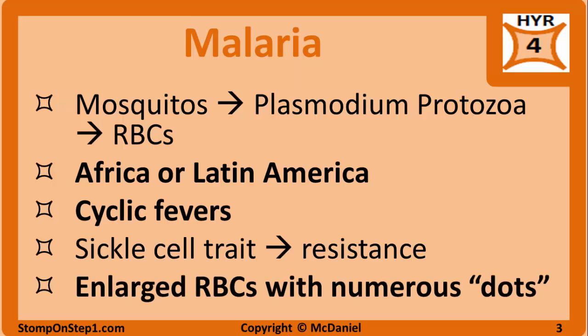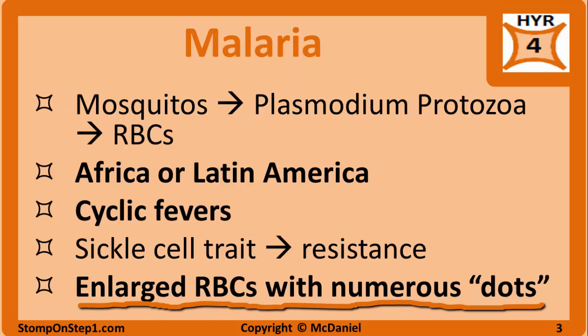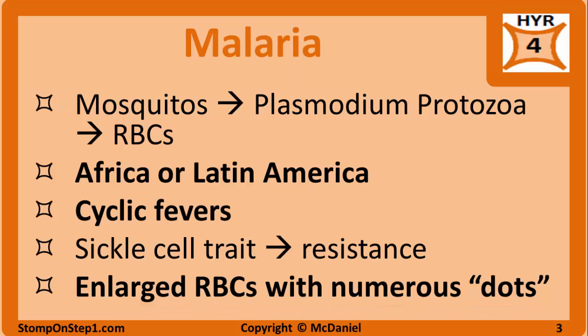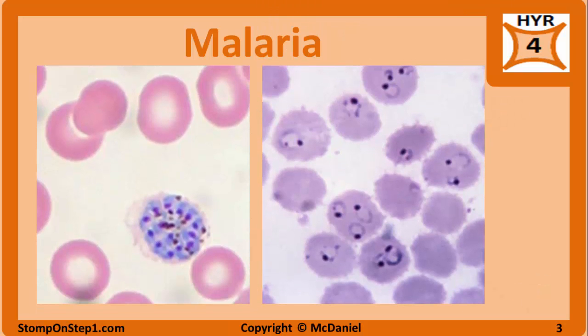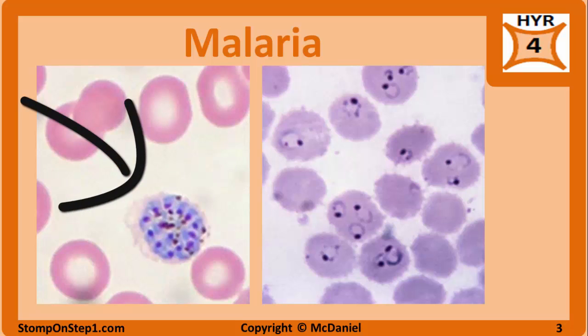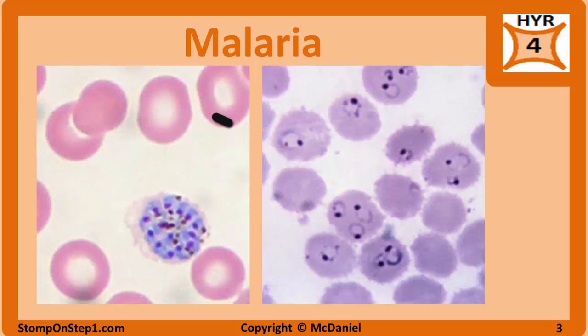A peripheral blood smear will show enlarged RBCs with numerous small parasite dots on Giemsa stain. Here is a picture of the histology. You don't need to be able to identify specific stages or species, but on the left we have mature schizonts containing merozoites, and on the right you can see ring-shaped trophozoites.